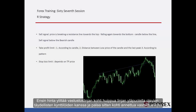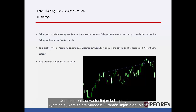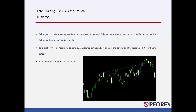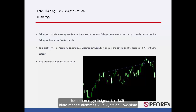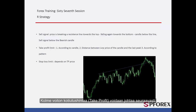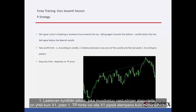Sell Signal: When a price crosses the resistance line towards the top with complete candles over the resistance line and then returns to the resistance line, if price passes the resistance line towards the bottom and the close price of a candle forms under this line, then a sell signal is generated after price goes lower than the low price of that candle. The first take profit (TP1) equals X1 pips lower than the entry price, where X1 is the length of the bearish candle that forms below the resistance line.